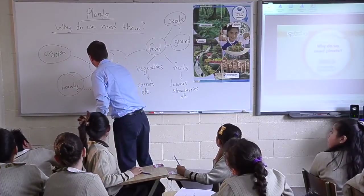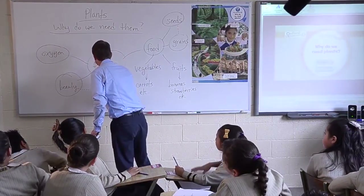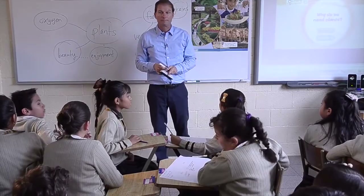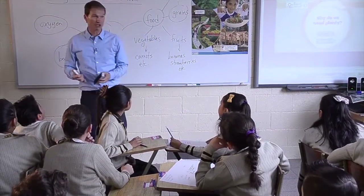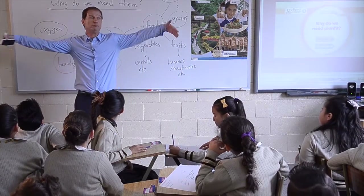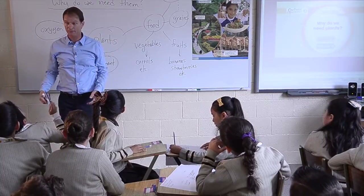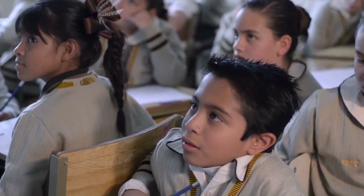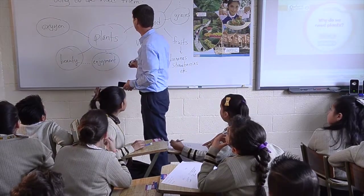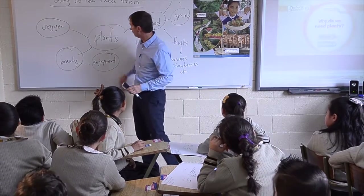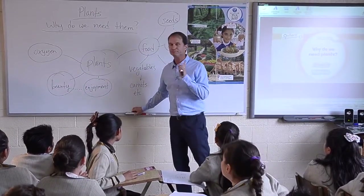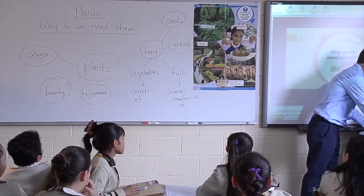Did you see anyone growing plants in the video? When you grow plants in a place, what do we call that? Gardens — exactly. Do you have gardens in Mexico City? Yes, lots of them. And when you have a big area where they grow plants, what is that called? A farm. When farmers grow plants like corn, we call those places farms. So plants give us enjoyment, beauty, oxygen, and food. There's a lot of things that plants do for us — great job everyone.